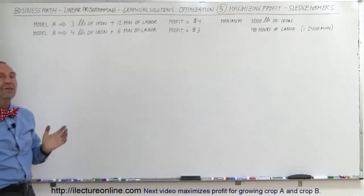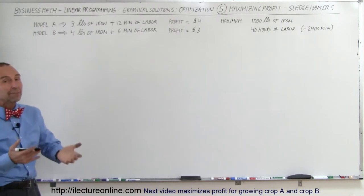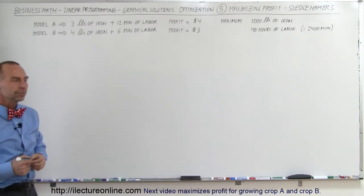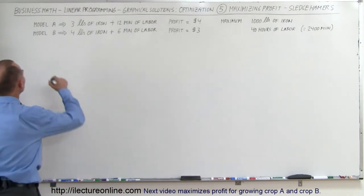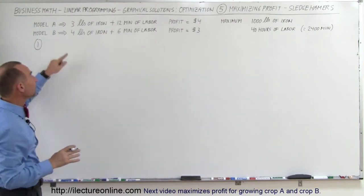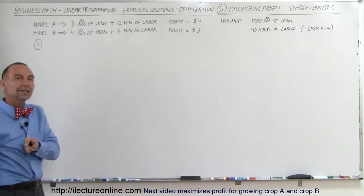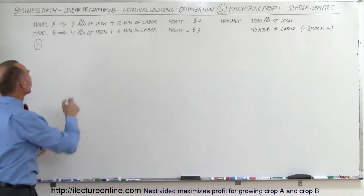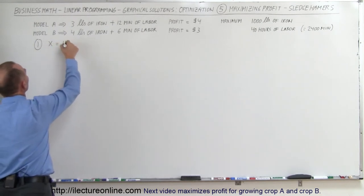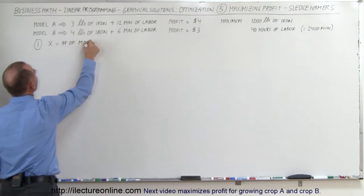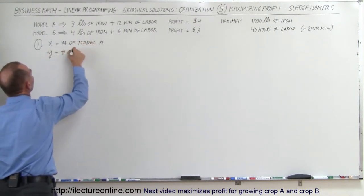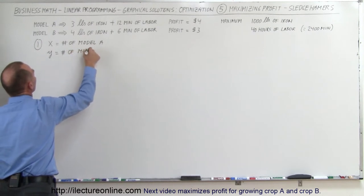So how many of each hammer, model A and model B, should we produce to maximize the profit? The first thing we want to do — step one — is define the variables X and Y. We don't want to use A and B, that gets very confusing. Use two independent variables, X and Y, to represent the number of each model. X equals the number of model A and Y equals the number of model B.